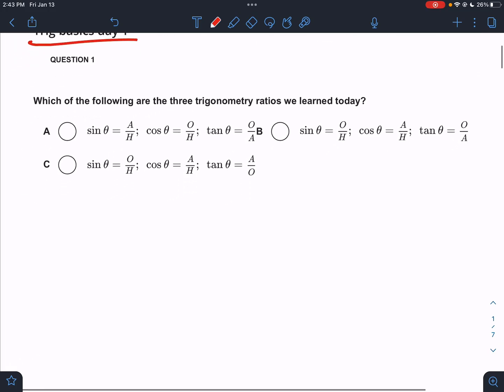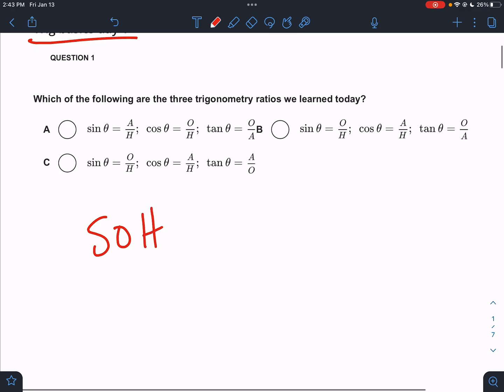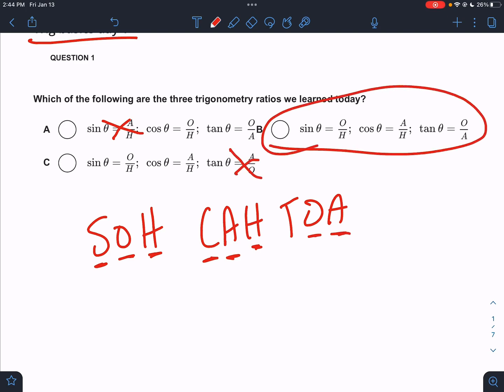First part is the trigonometric ratios. We learned the word SOHCAHTOA. It kind of rolls off the tongue, so we know that sine goes with opposite over hypotenuse, so this one's out. We know that cosine goes with adjacent over hypotenuse, so we're still good. And then we know tangent equals opposite over adjacent, so this one's out. This is the only one that lists the three trigonometry ratios correctly.